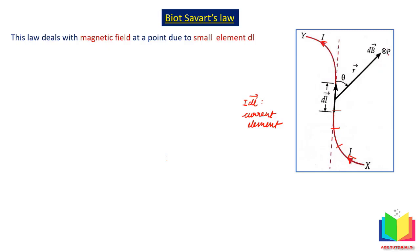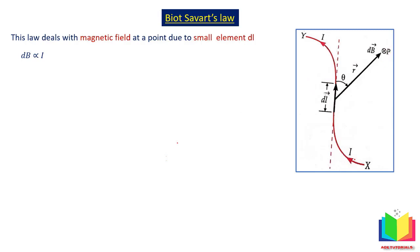The magnetic field produced at P depends on the angle theta between dL and R. Biot-Savart observed that the magnetic field at any point P is directly proportional to current I flowing through the wire, directly proportional to the length dL, directly proportional to sine of the angle theta between dL and R, and inversely proportional to r squared — as distance increases, the magnetic field decreases. Combining all these factors: dB is directly proportional to I dL sin theta over r squared.